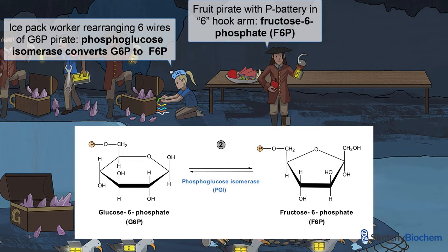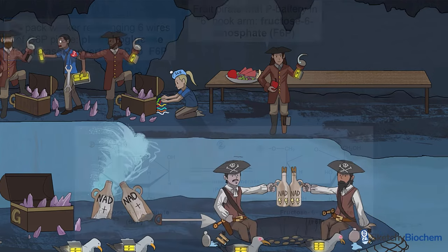Say ahoy to our F6P pirate. She's holding fruit to remind you of fructose, and the filled battery slot next to her six hook shows the location of the phosphate on the sixth carbon.